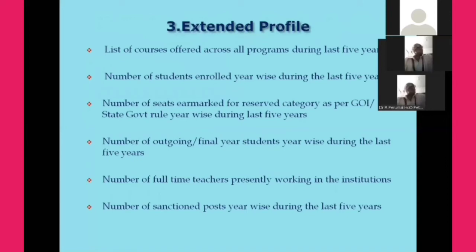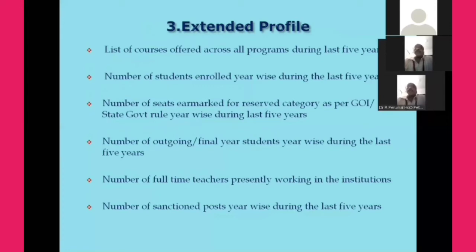The extended profile contains: the list of courses offered across all programs during the last five years, the number of students enrolled year-wise during the last five years, the number of seats earmarked for reserved categories, the number of outgoing or final-year students year-wise during the last five years, the number of full-time teachers currently working in the institution, and the number of sanctioned posts year-wise during the last five years. All data provided in the extended profile will be automatically populated into the criteria.